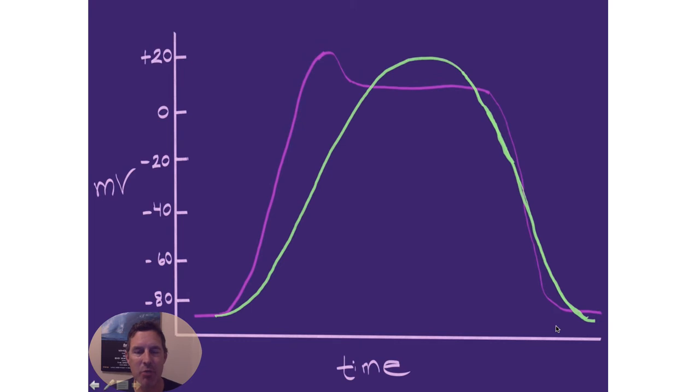Now, if we throw in the twitch, so in lime green here, this is the mechanical activity. Keep in mind the pink was the electrical activity. So lime green is the mechanical activity. It does not correspond to what I have on the y-axis here in millivolts. It should be tension or force in kilograms.